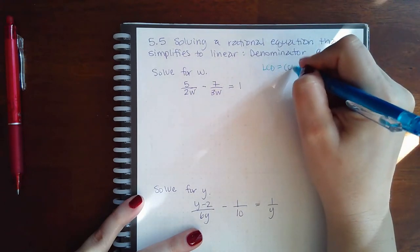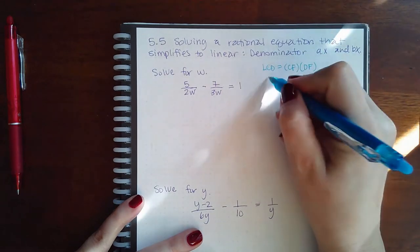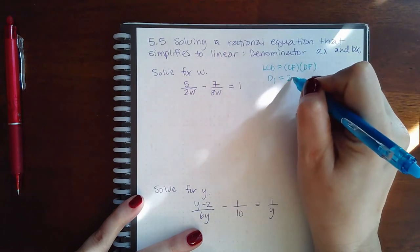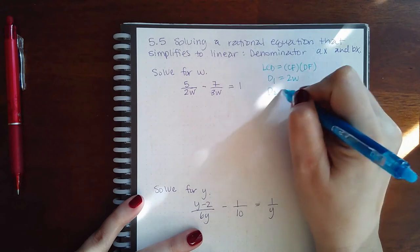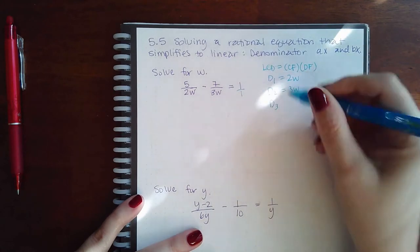And that means we need the common factors times the distinct factors. So denominator 1 is 2W, denominator 2 is 3W, and denominator 3 is just a 1.